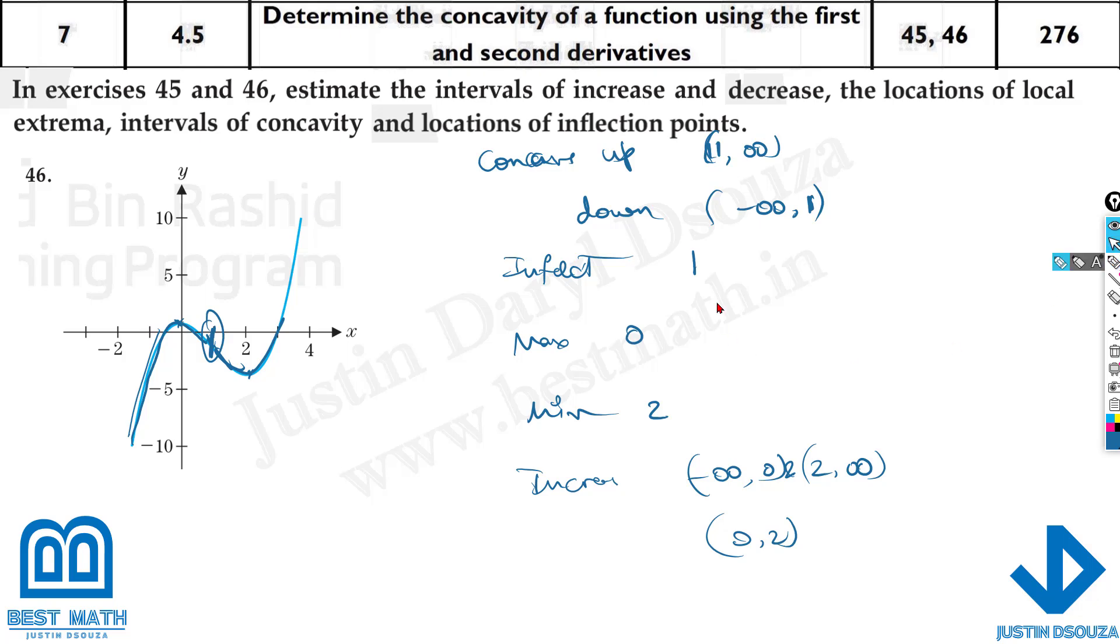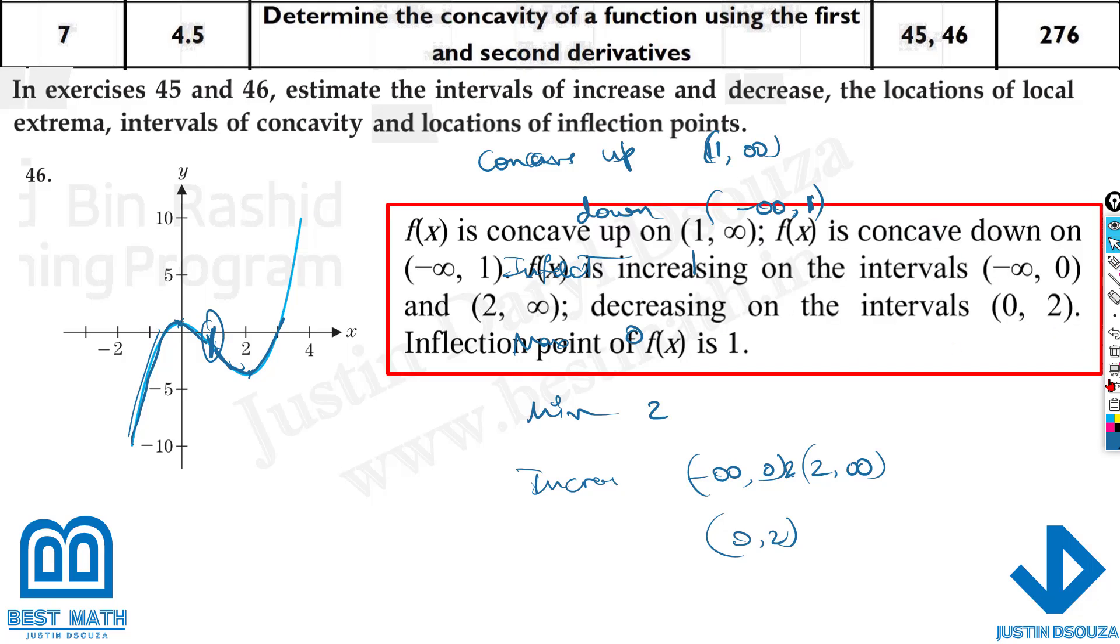Everything is visible in the graph. So we can look into the answers here. Concaving up from 1 to infinity. Whereas downwards, it's minus infinity to 1.